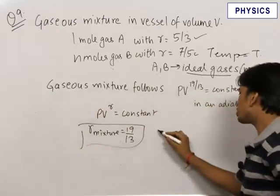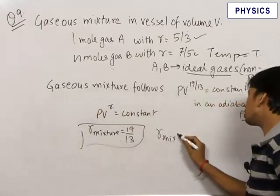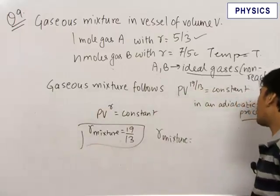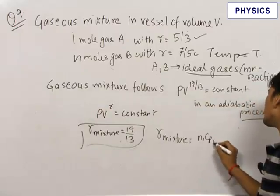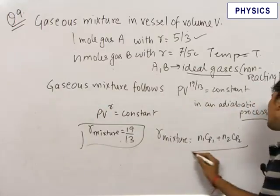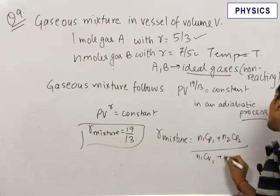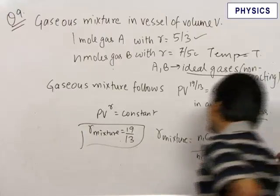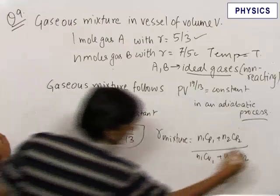As soon as you are given this, this formula should strike you: gamma mixture. And you should also remember this formula. Gamma mixture is equal to n1 Cp1 plus n2 Cp2 upon n1 Cv1 plus n2 Cv2. This is a very important formula and this is given to be equal to 19 upon 13.